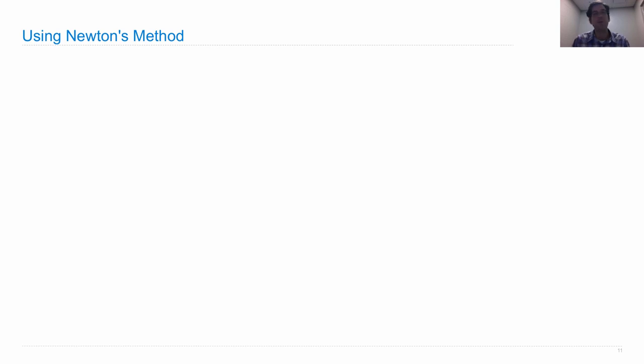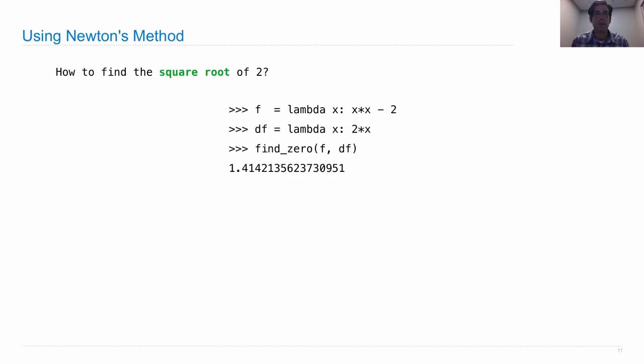So how do we use Newton's method, assuming we can implement it, which we will do pretty soon? Well we can find square roots with it. The way we'd find the square root of 2 is we would define a function that is x squared minus 2, because the solution of that will be the square root of 2, whatever it is.